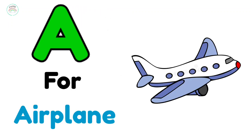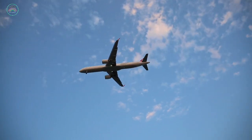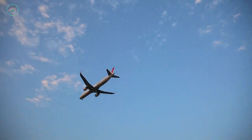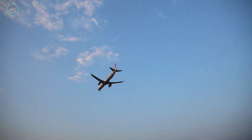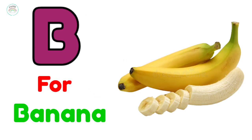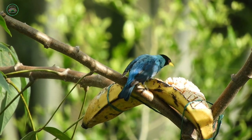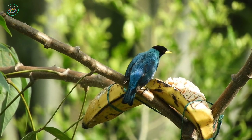A for airplane, yani hawai jahaj. B for banana, yani kele.